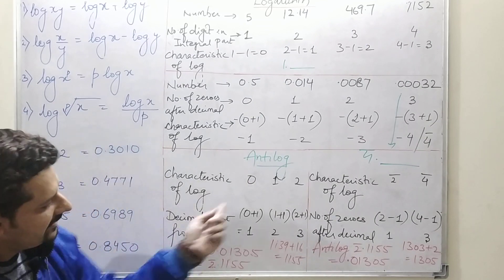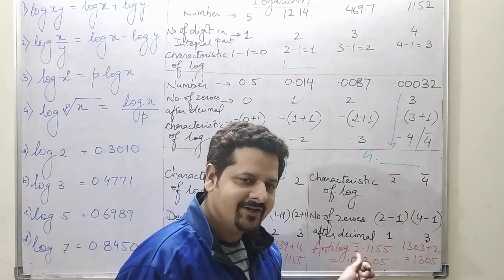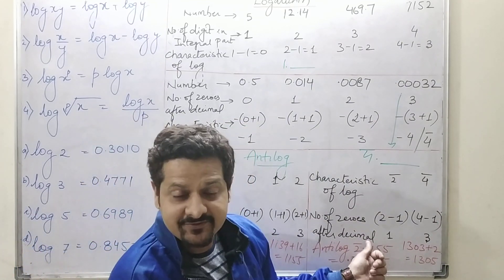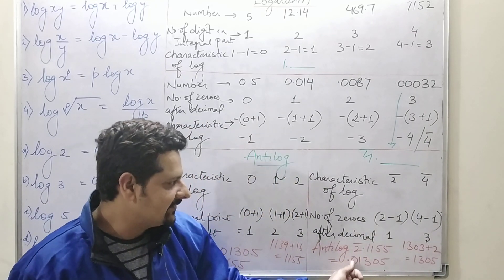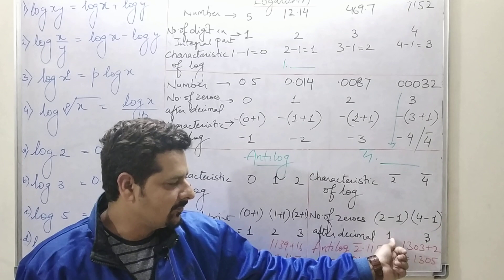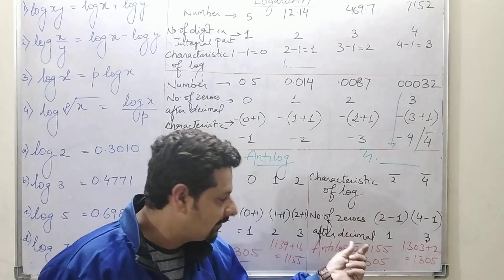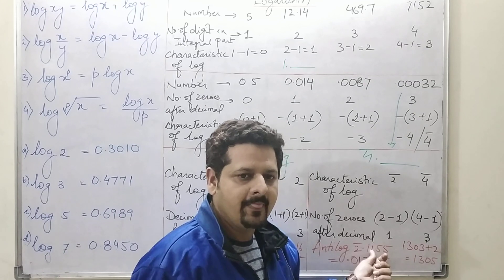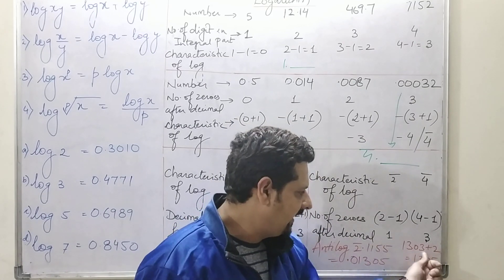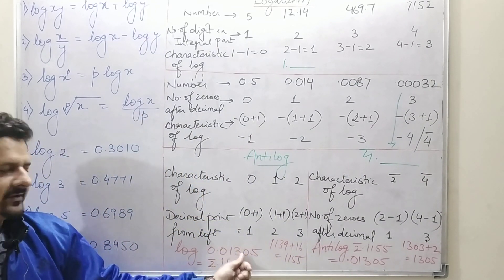Now for the antilog of 2̄.1155: the characteristic is 2̄, which means one zero after the decimal point, so start with 0.0... Then from the antilog table, use the mantissa .1155 — look up row 11, column 5, which gives 1303, then add mean difference 2 from column 5, giving 1305. Placing the zero: the answer is 0.01305, which matches the original number.